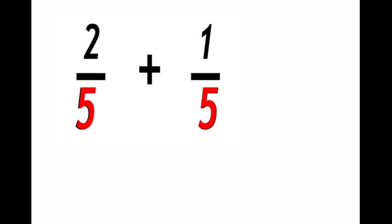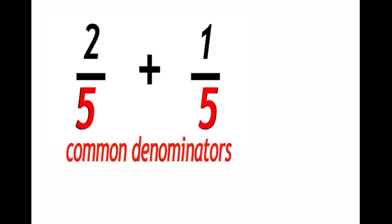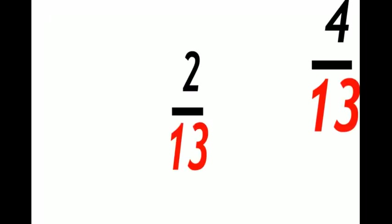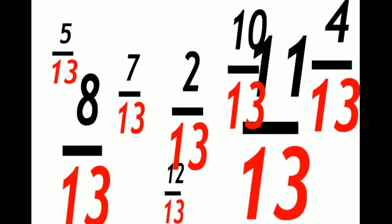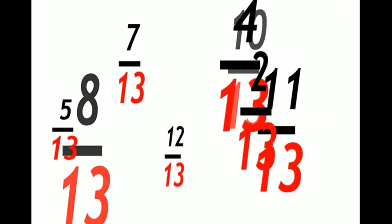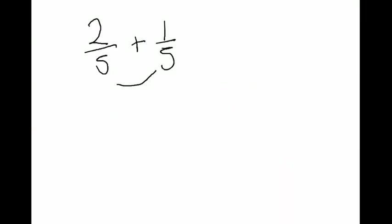The correct term for this is that they have common denominators. So for fractions to be similar they must have common denominators. And here's another example. As you can see all these are fractions of 13 and because they've got the same denominators they are similar fractions.